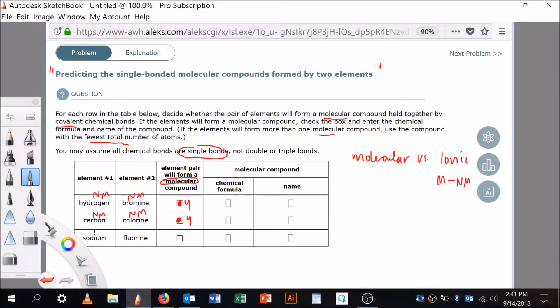Is sodium a metal? Whoa, yeah, that's from the left side of the periodic table. Yes, it is a metal. So no, they will not make a molecular compound. All right, now, so the chemical formula then is irrelevant because it's not a molecular compound, right?